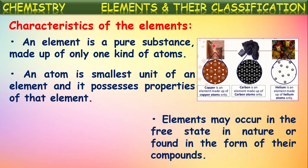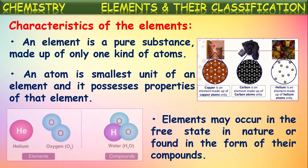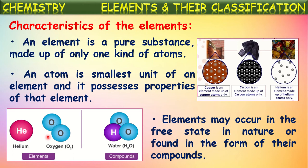Elements may occur in the free state in nature or in the form of compounds. Some elements exist in the free state, like helium, oxygen and nitrogen — gases present in atmospheric air. Some elements exist in the combined state, where two or three elements combine chemically to form new substances called compounds.